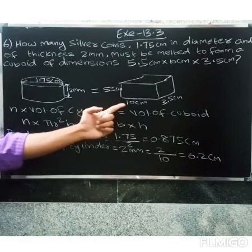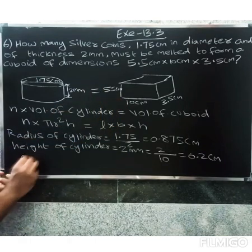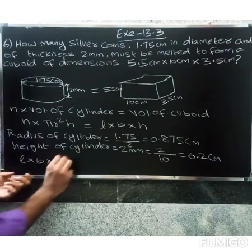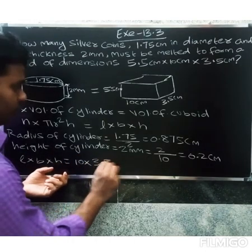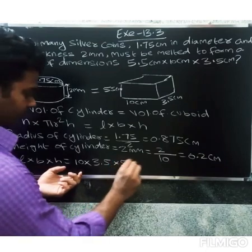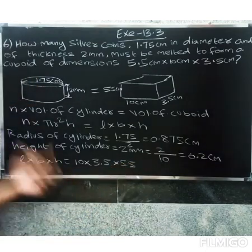Now substituting values, l into b into h equals 10 into 3.5 into 5.5.